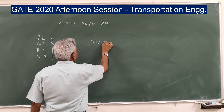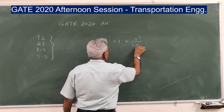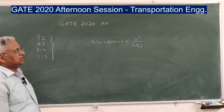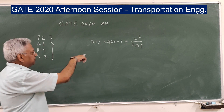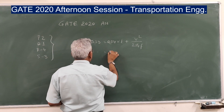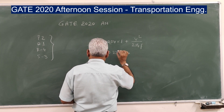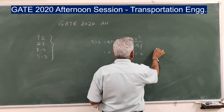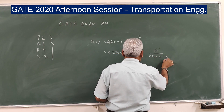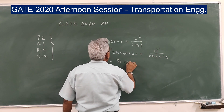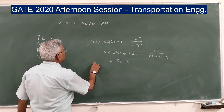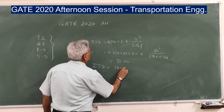Stopping sight distance is: SSD = 0.278 × V × T + V² / (254 × f). Substituting values: 0.278 × 60 × 2.5 + 60² / (254 × 0.36) = 81 meters. Intermediate sight distance on a two-lane road is 2 × SSD, therefore the correct answer is 162 meters.